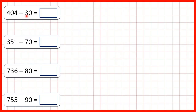Now, we need to subtract a multiple of 10 from a 3-digit number. Remember, a multiple of 10 is a number in the 10 times table, so a number that ends in a zero.